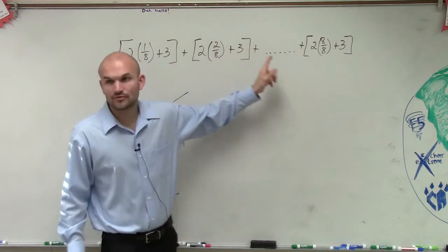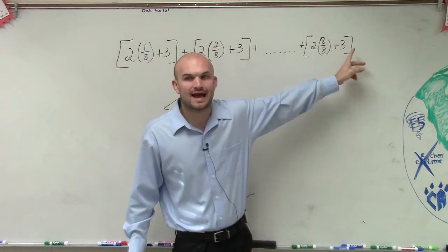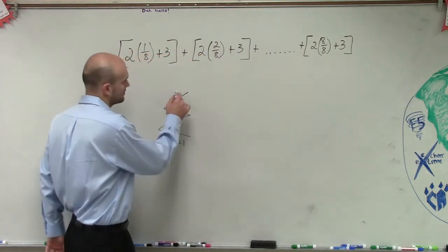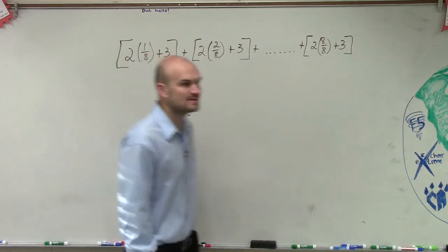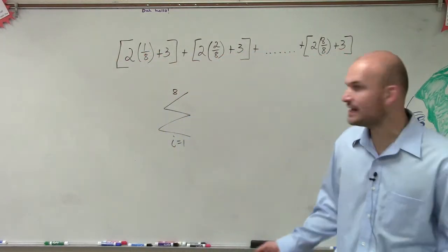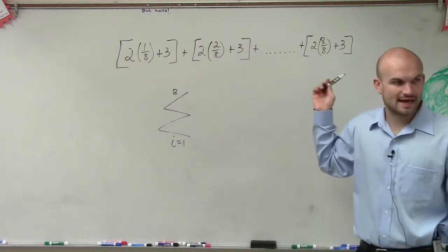Then we go through all the way to the end, and we notice that they're ending at 8. Now what we simply need to do is determine what is the rule. How is everything changing from the first term to the eighth term?